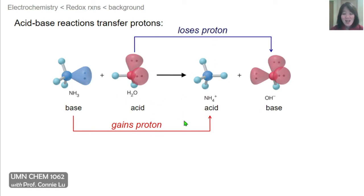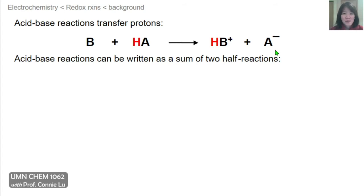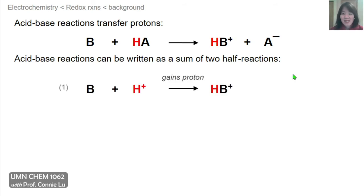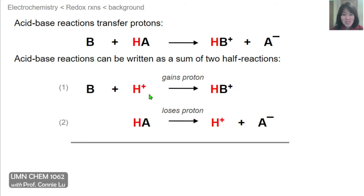The gain and loss of a proton occurs simultaneously when ammonia takes this proton from water to form these two products. In the generic form, base plus acid HA forms products. This overall reaction can be split into two half reactions: the base gaining a proton to form its conjugate acid, and the acid HA losing a proton to form its conjugate base, A⁻. If we sum these two half reactions, the proton cancels from both sides, giving us the overall proton transfer reaction.